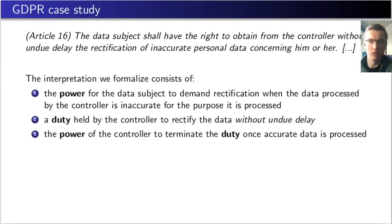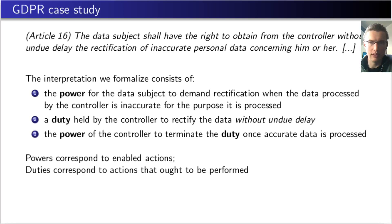Undue delay here is a so-called open-textured term, which is deliberately left open to interpretation. In the EFLINT language, we want to capture norms at their original level of abstraction, and we have a specialization mechanism to concretize certain concepts within an application. For example, within an application we can say that the duty needs to be fulfilled within five working days. In EFLINT, powers correspond to enabled actions, and duties correspond to actions that are expected to be performed after the duty has been created.